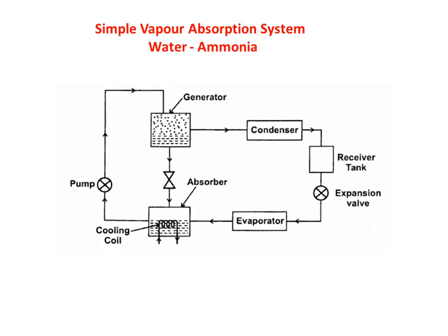The diagram shows the simple vapor absorption refrigeration system with water and ammonia. Here, water is the absorbent and ammonia is the refrigerant. Take one minute and look at the various components. You have the generator, condenser, receiver tank, expansion valve, evaporator, absorber, and pump.